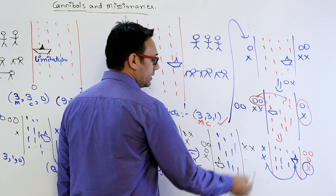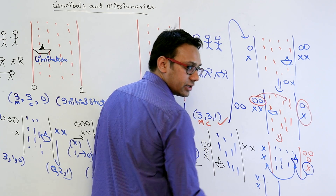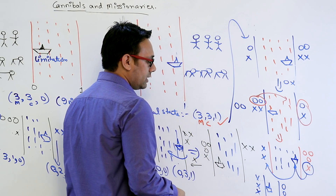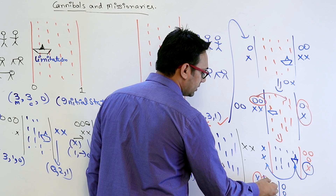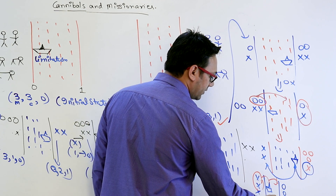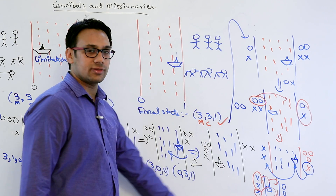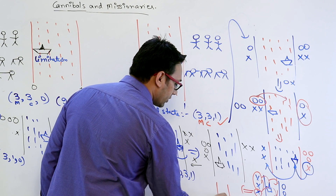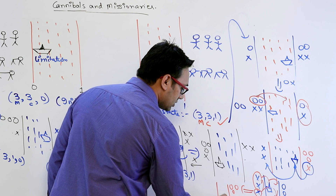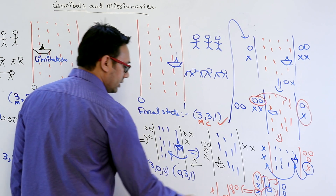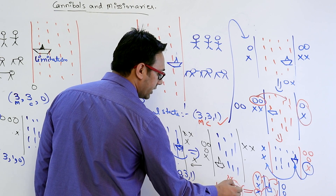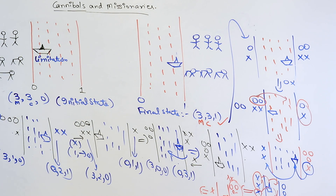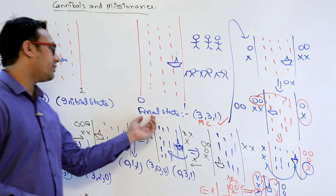Now the single cannibal takes the boat and goes to bank 1. We have three cannibals at bank 1 and three missionaries at bank 0, with the boat there. Then two cannibals take the boat back, one cannibal returns with the boat, and we continue: two cannibals go across again, one comes back, until all reach the final state.